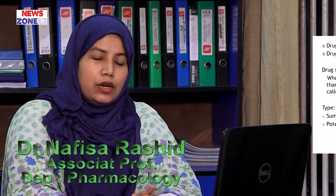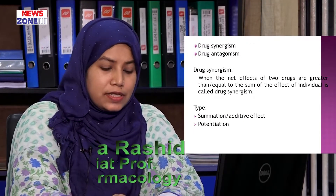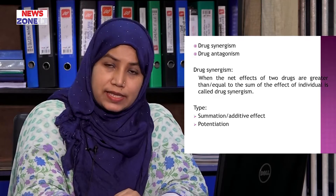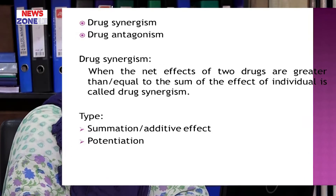In this topic, we will discuss drug synergism and antagonism. First, I want to define what is drug synergism. When the net effects of two drugs are greater than or equal to the sum of their individual effects, it is called drug synergism. That means when two or more drugs that individually produce a response are combined, if their combined action is equal to or greater than the sum, this is called drug synergism.